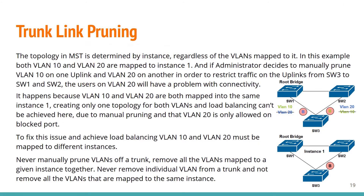Trunk link pruning. The topology in MST is determined by instance, regardless of the VLANs mapped to it. In this example, both VLAN 10 and VLAN 20 are mapped to instance 1. If an administrator decides to manually prune VLAN 10 on one uplink and VLAN 20 on another uplink in order to restrict traffic on the uplinks from SW3 to SW1 and SW2, the users on VLAN 20 will have a problem with connectivity.